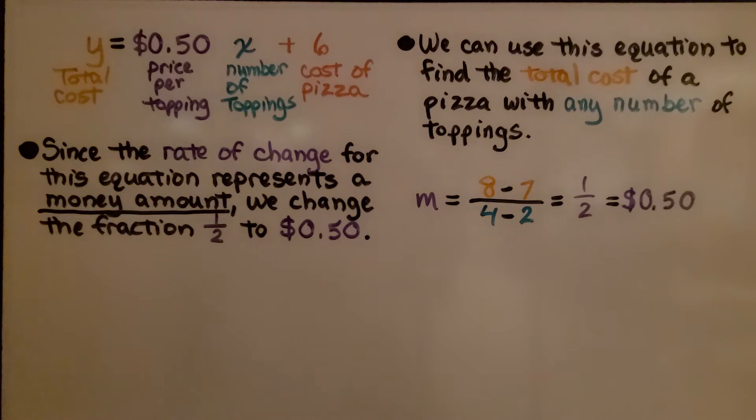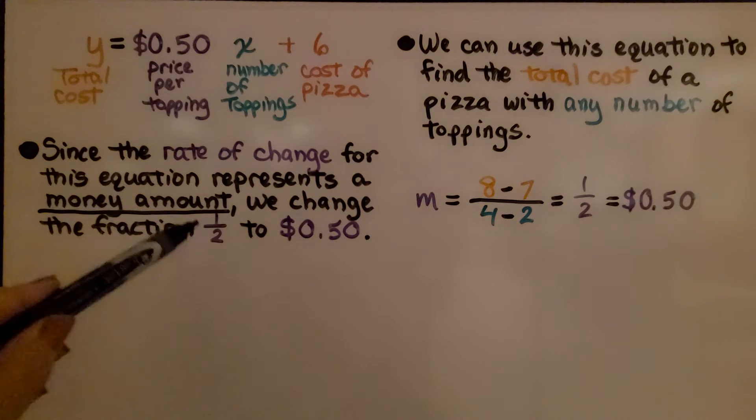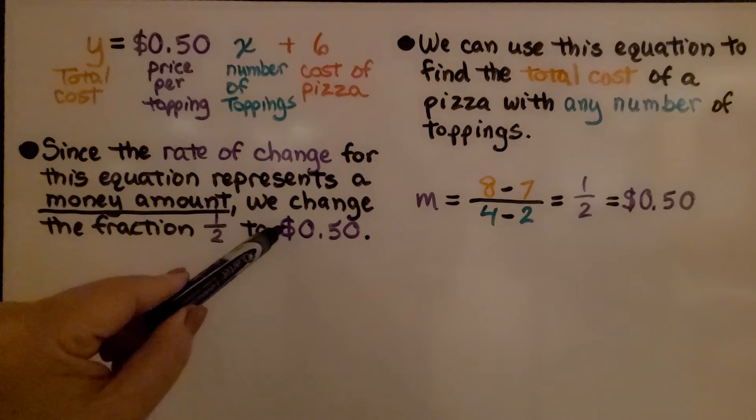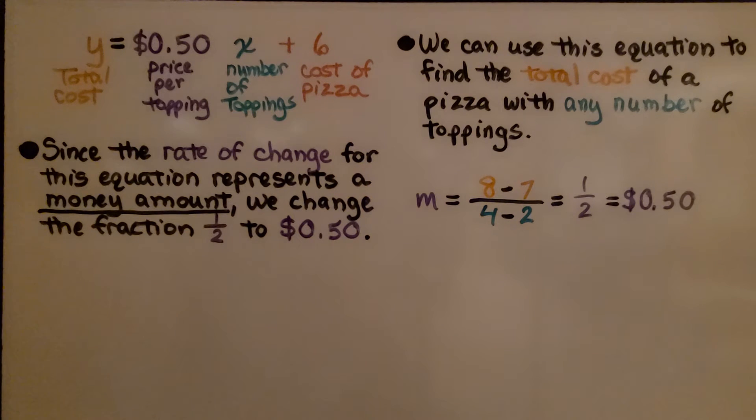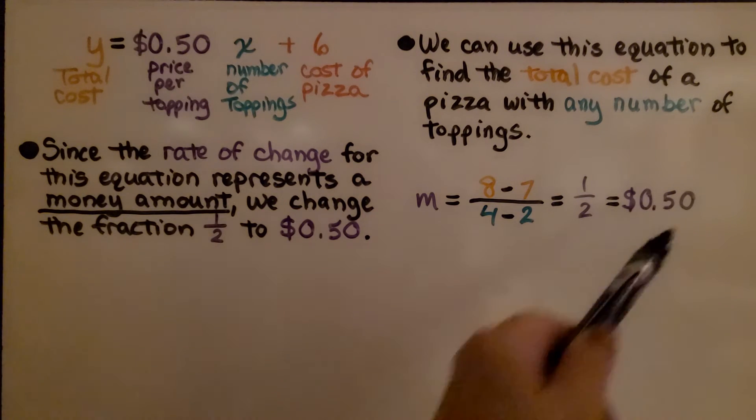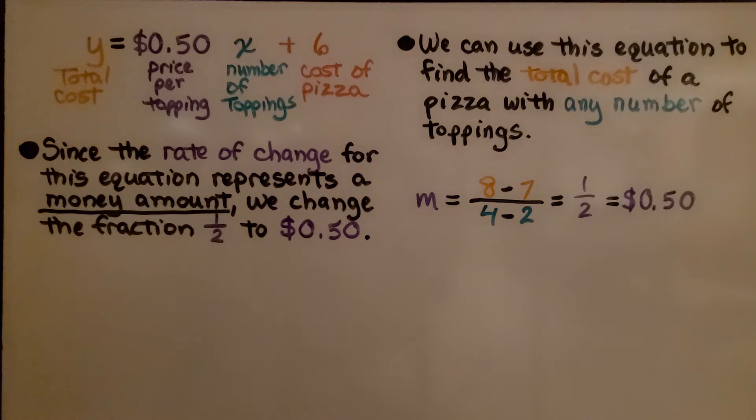Since the rate of change for this equation represents a money amount, the cost for each topping that we add, we change the fraction one half to a dollar sign zero, decimal point five zero for 50 cents. We can use this equation to find the total cost of a pizza with any number of toppings. We have one half represented by the 50 cents.